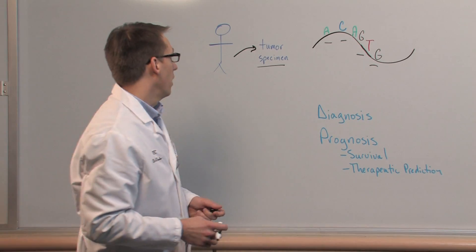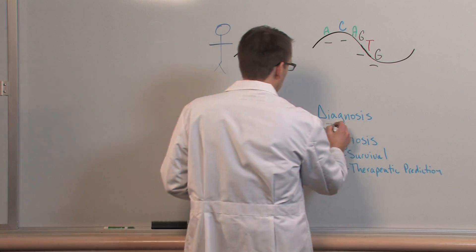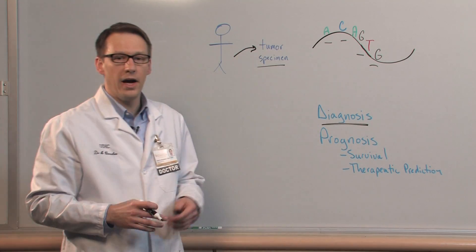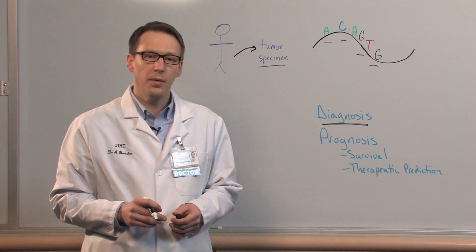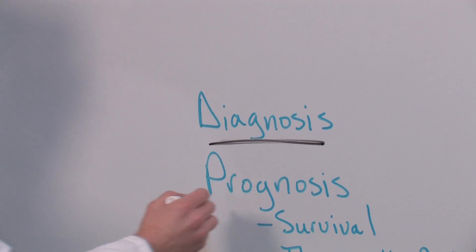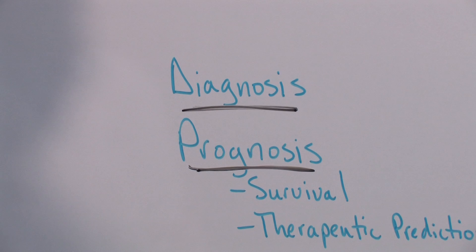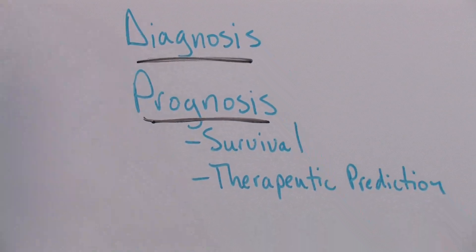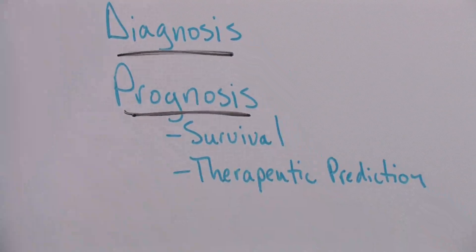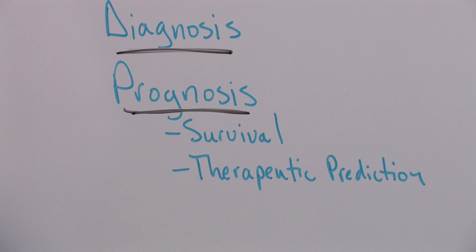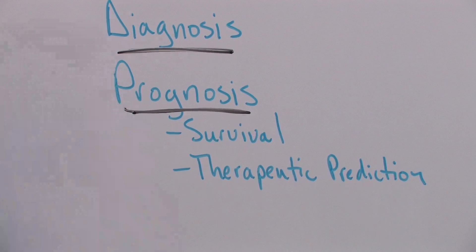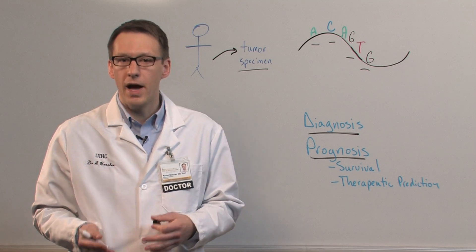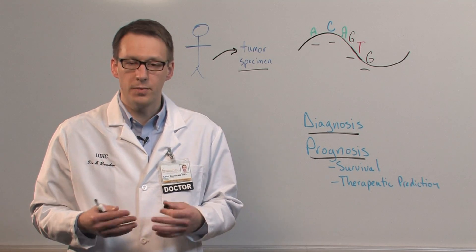Some of these mutations are diagnostic for particular cancer types, so they help us identify the specific cancer type, while other mutations are prognostic and help us with determining your survival or potential response to therapy. Over years and years of research and development, we've identified drugs that can block the abnormal activity caused by the mutation.